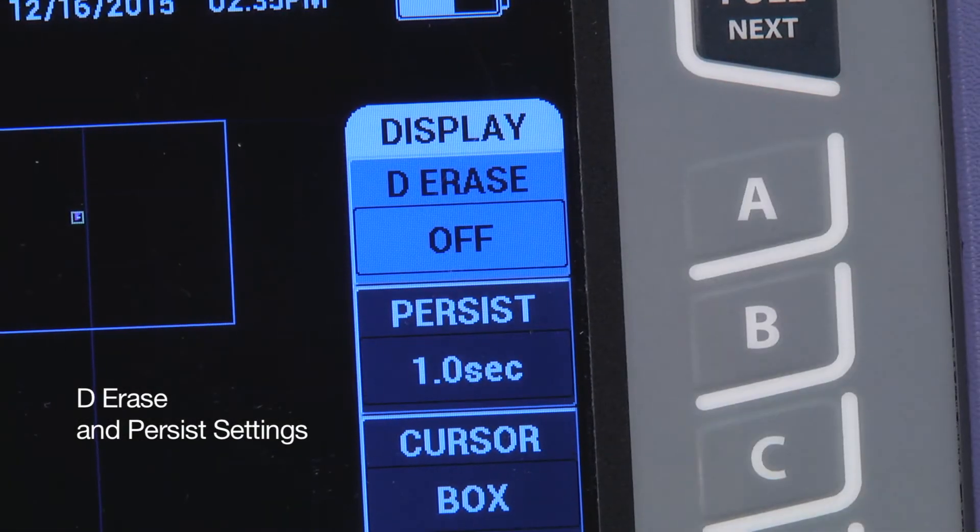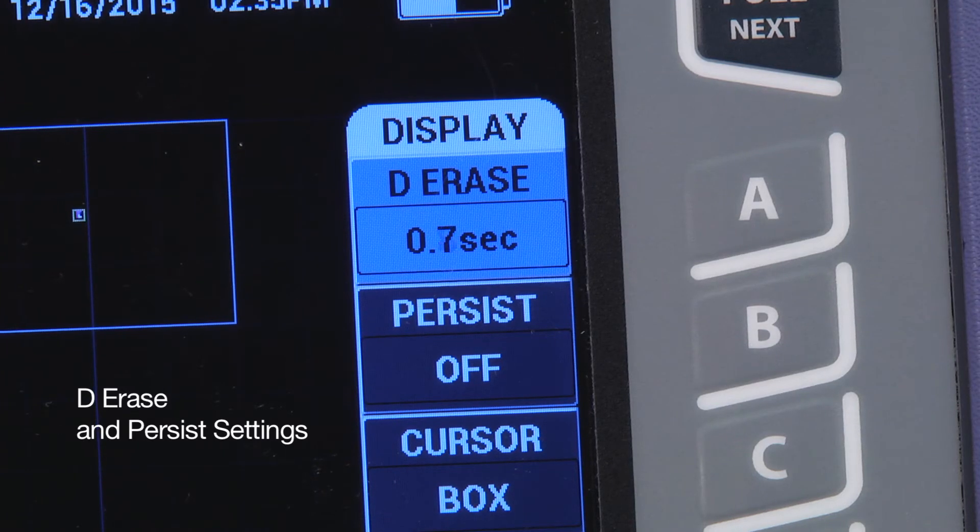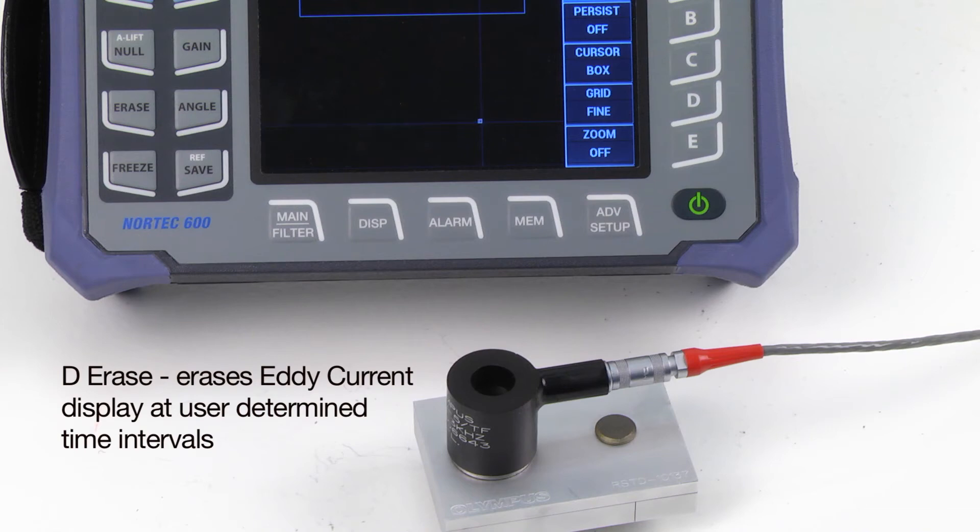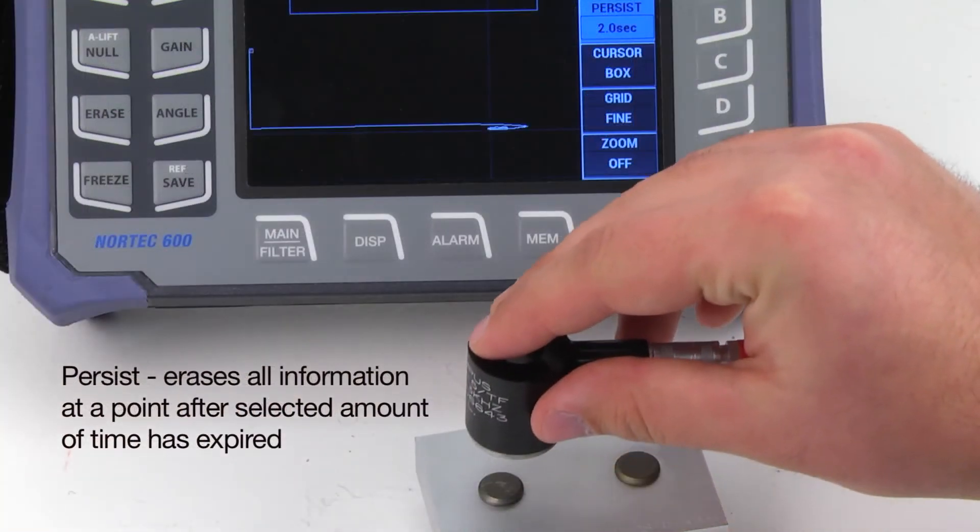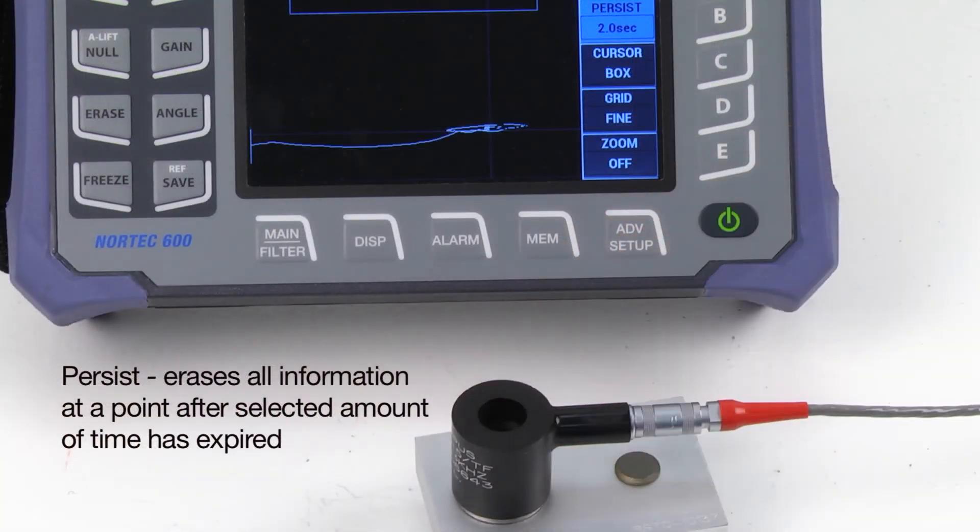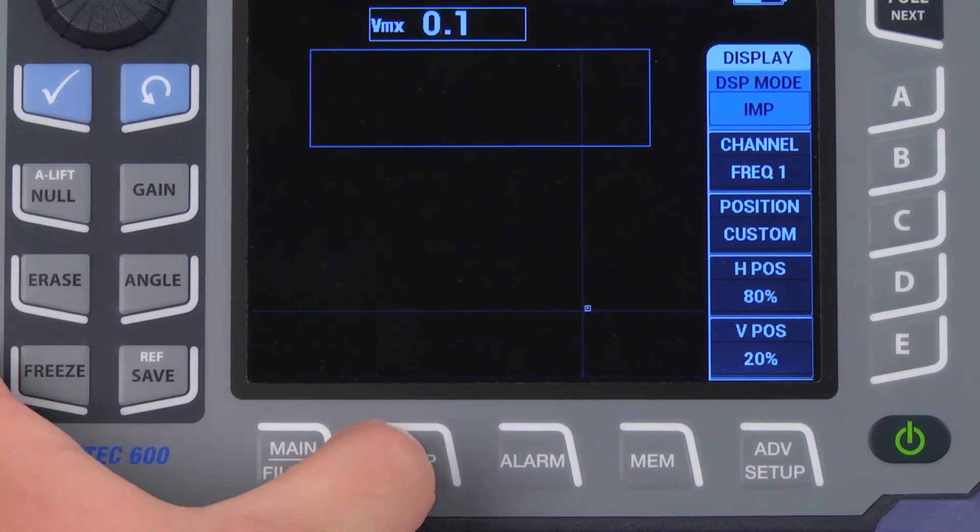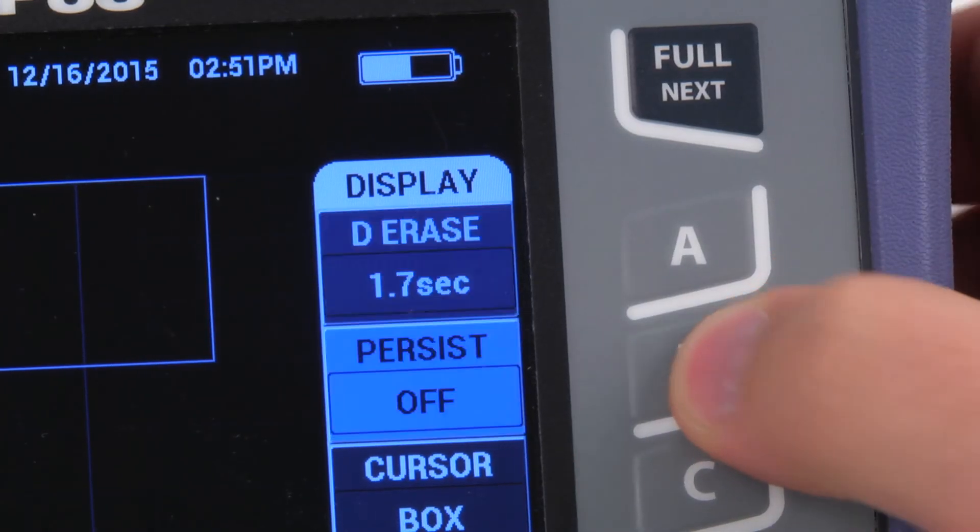Changing de-erase and persist settings can be useful for some applications. De-erase erases any current display at usually determined time intervals. Persist erases all information at a particular point after the selected amount of time has expired. To set the de-erase and persist time intervals, press DISP twice, then use the A and B keys and knob to adjust the values.